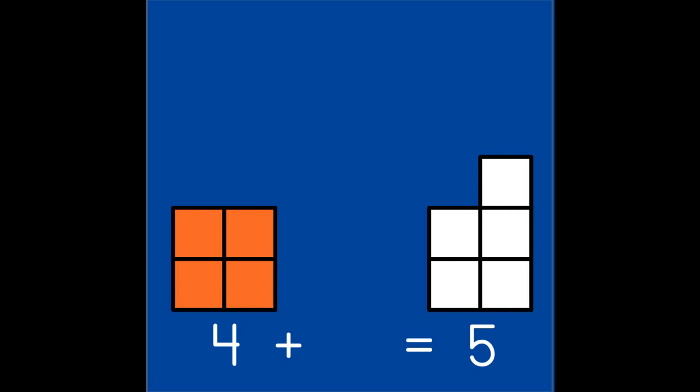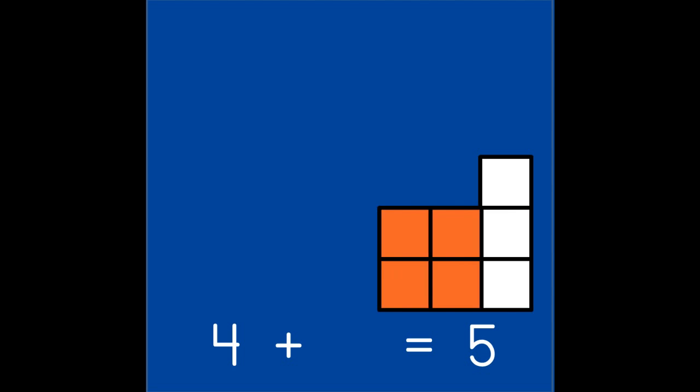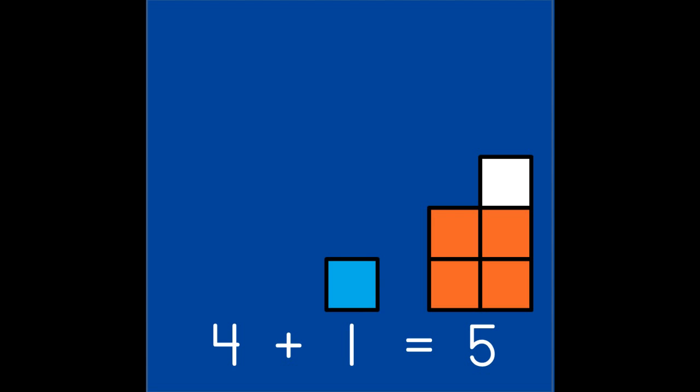In this video, we will learn to combine partners to make the number 5. Combine means to put the two partners together to make 5. We will use a white 5 pattern as a puzzle to fill with our partners. This helps us see how the partners work together to make 5. Let's put the number 4 in our puzzle. What partner goes with 4 to make 5? 1. 4 and 1 are partners of 5 because they go together to make 5.